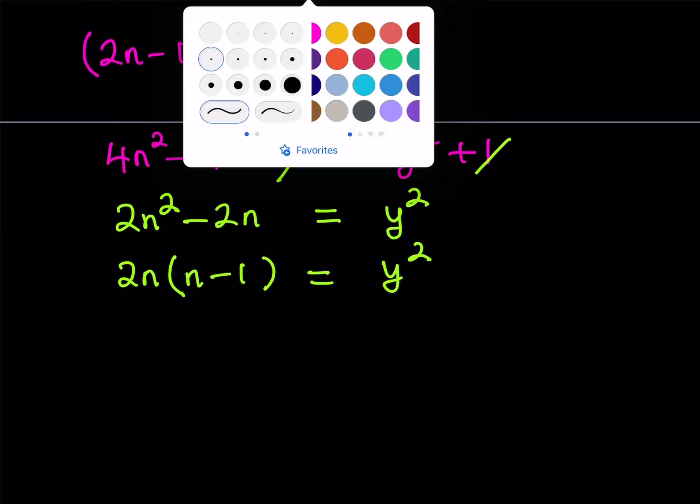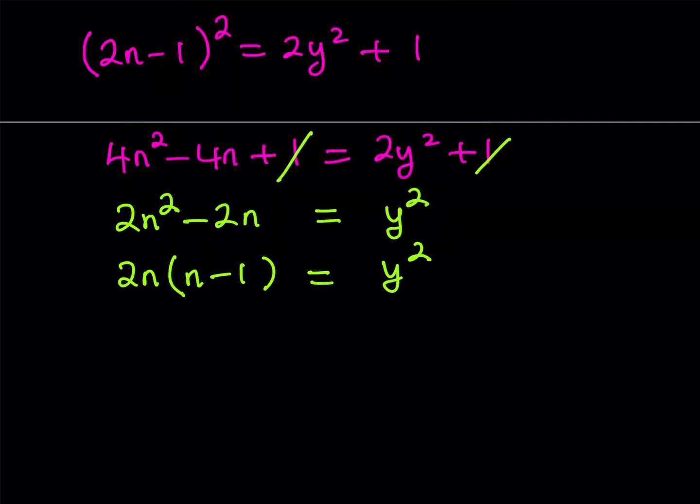Now, we do have 2n multiplied by n minus 1, and these are both integers. You're multiplying them, but 2n is even. So the left hand side is basically even, which means that the right hand side also needs to be even. So what? Are we going to replace y with something like 2k? Nope. We're not going to go there because we don't need to.